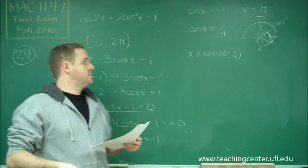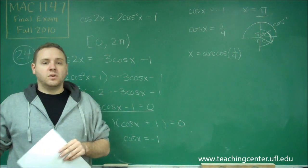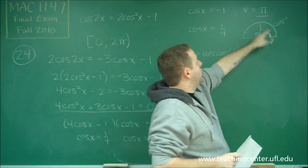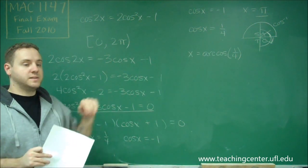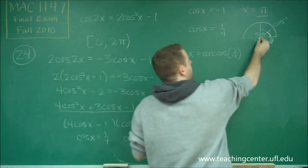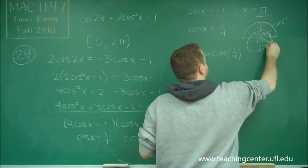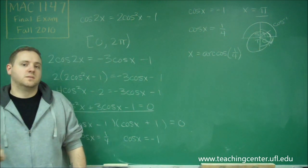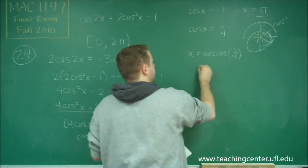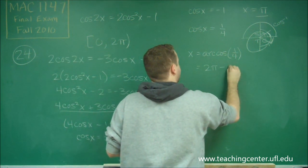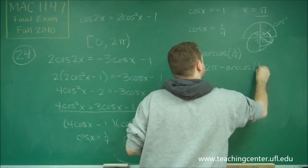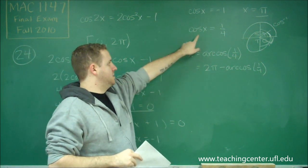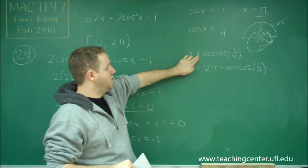We can't just put negative arc cosine of 1/4, even though that would be geometrically right, because our interval is from 0 to 2π, so we can only go positive from our 0 axis. To find this angle, we'd be going 2π and then backwards by arc cosine of 1/4. So our second answer is 2π minus arc cosine of 1/4. These two values are both solutions — arc cosine of 1/4 is in quadrant 1, and 2π minus arc cosine of 1/4 is in quadrant 4.